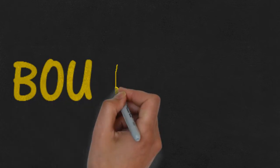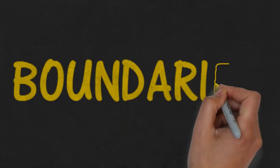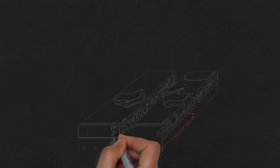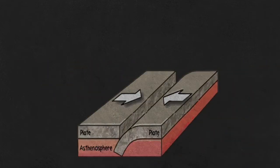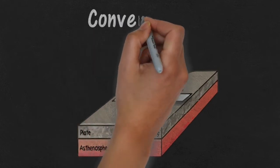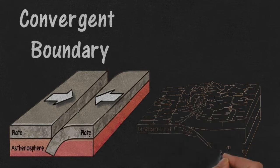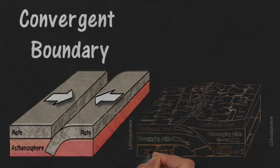And speaking of the plates' boundaries, this is where a lot of the action happens. When two plates collide and push together, the place where they make contact is called a convergent boundary. Mountains, volcanoes, islands, and earthquakes form at convergent boundaries.